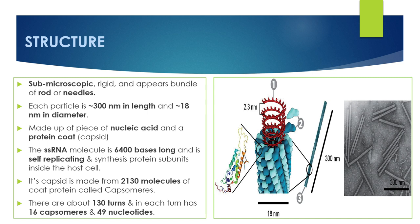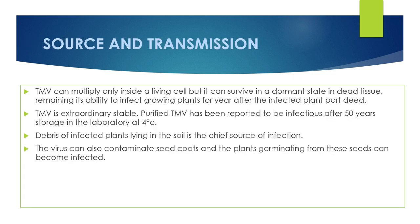The single-stranded RNA is self-replicating and synthesizes the protein subunits inside the host cell. Its capsid is made up of 2130 molecules of protein called capsomers. The capsomers are helically arranged around the single-stranded RNA molecule, and there are about 130 turns. Each turn has 16 capsomers and 49 nucleotides. Each capsomere is made up of 158 amino acids of 16 different kinds.